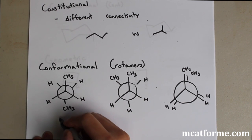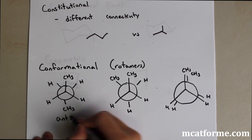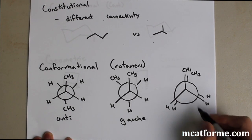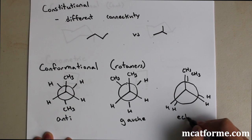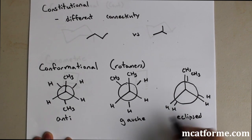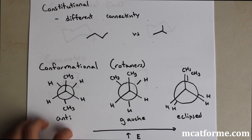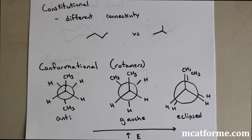So this first one, CH3s are going to be on opposite sides, so they're going to be anti. Next to each other is going to be gauche. And this last one is eclipse. And so we increase in energy as we're going to the right. So eclipse has the highest energy level.